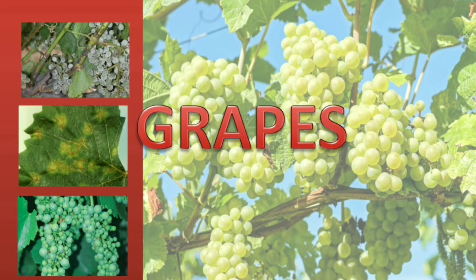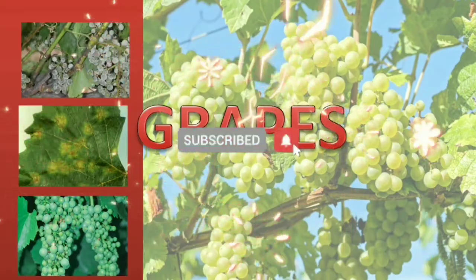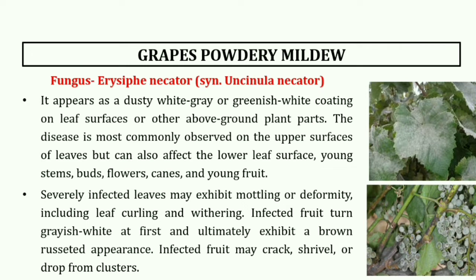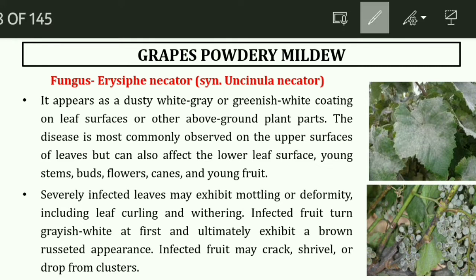The first important disease in grapes is the powdery mildew. This is a very common disorder. It is a fungal disorder, and the scientific name is Erysiphe necator, also known as Uncinula necator. This is the new name of Erysiphe necator.